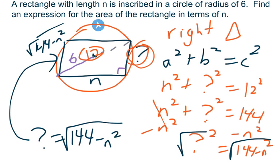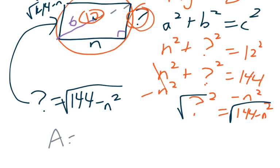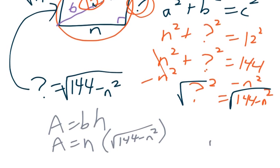So now how do I find the area? That's what the question is asking for. The area of the rectangle in terms of n. Well, I'm just going to do base times height, right? That's what area is. So if area equals base times height for a rectangle, it's just going to be n, which is our base, times the square root of 144 minus n squared. And that's our final answer.